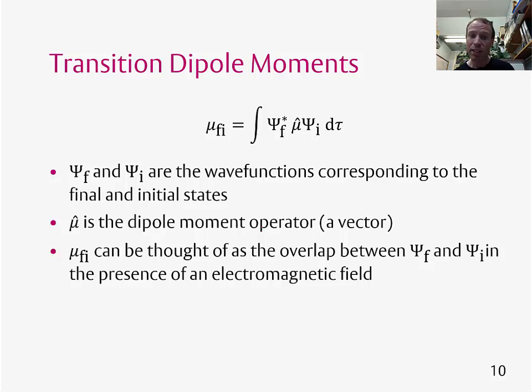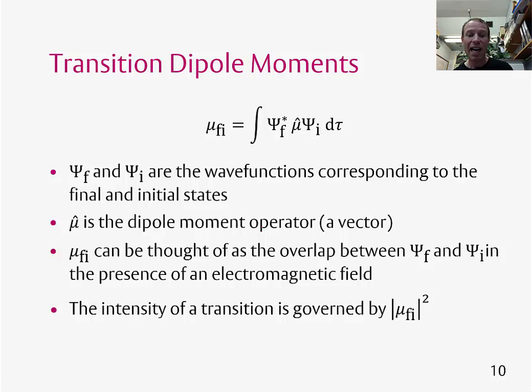As I said, it's a number. You can work it out. And once you've worked it out, if you square it, this tells you how intense the transition is going to be. Of course, if the number is equal to zero, you square it, you get zero. This says that the transition will have no intensity, which means the transition is not allowed. If mu fi is a large number, you square it, it gets even larger, and then this means this will be a strong transition.